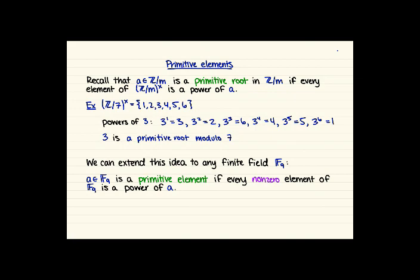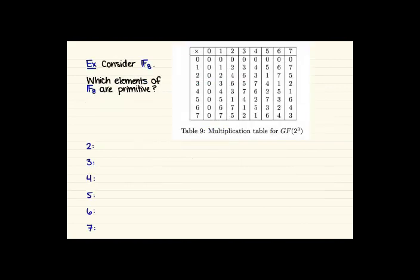So we're using this exact same idea, but now we're going to be extending this to any finite field FQ, not just looking at those special ones Z mod M where M is prime. So the idea is basically the same that we have A in FQ is a primitive element if every non-zero element of FQ is a power of A. We need to be careful here and make sure that our arithmetic is happening in the finite field that we're working in.